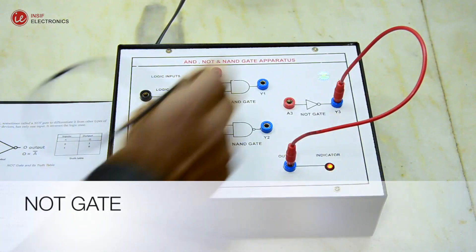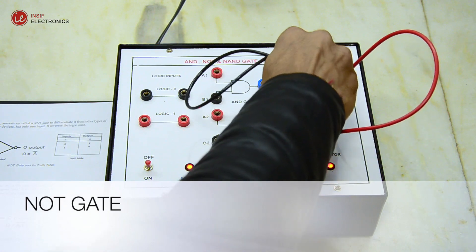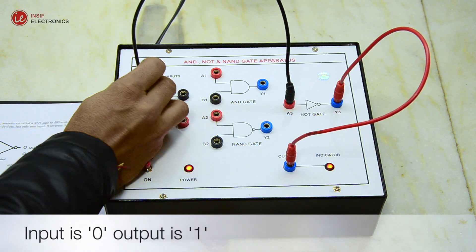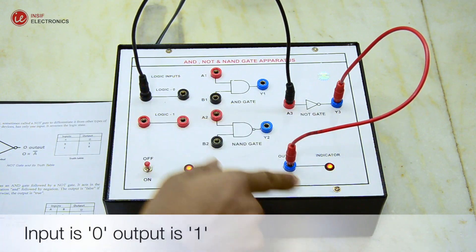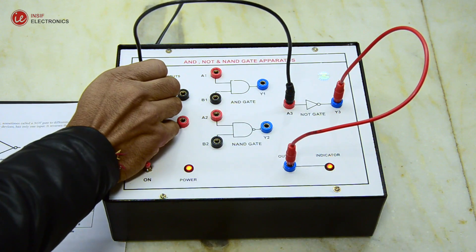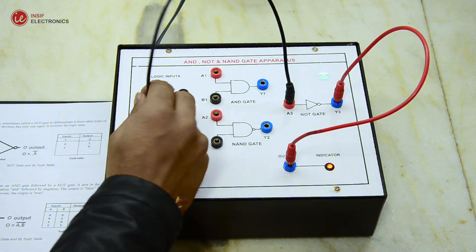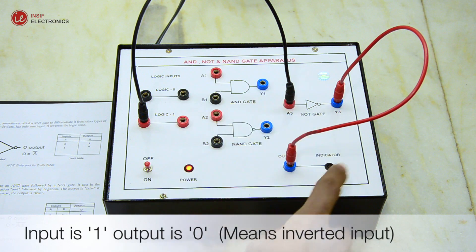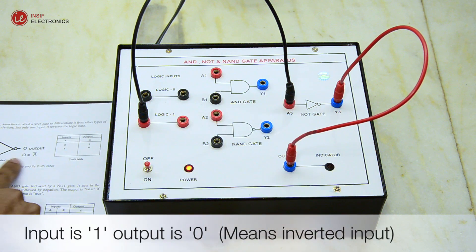Now let's see the NOT gate. A logical inverter, sometimes called a NOT gate to differentiate it from other types of electronic inverter devices, has only one input. It reverses the logic state.